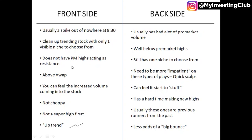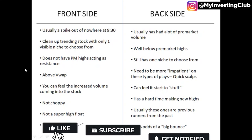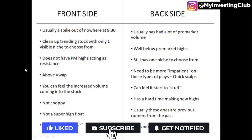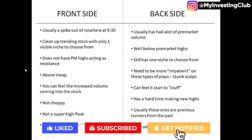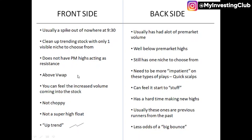On the front side, it doesn't have a pre-market high acting as resistance — it is making new highs actively. The high might be 30 cents from where it is trading. It's going to be above VWAP and you can feel the increased volume coming into the stock. When it's a hot stock you can feel people trading it and feel the volume coming in — that's what I like. I don't like it to be choppy at all. I'm looking for a free-flowing move, not a super high float for the front side. High float stocks usually trade like pigs and don't have a lot of range, so I don't like those.